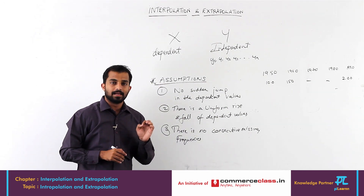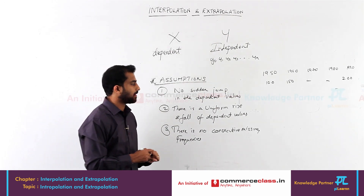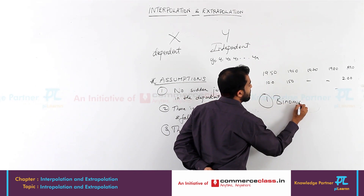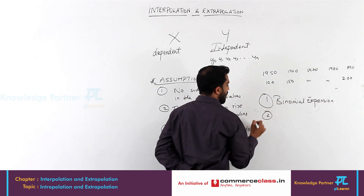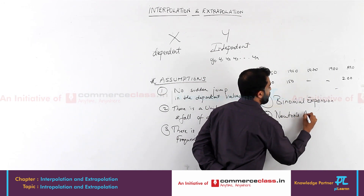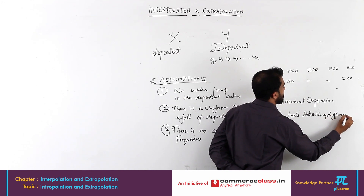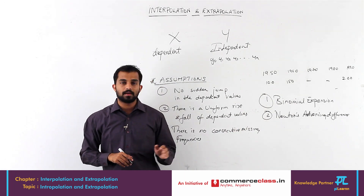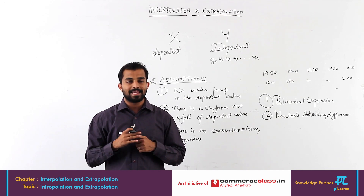Remember about interpolation and extrapolation: there are two methods of calculating this. The first method is called binomial expansion, and the second one is Newton's advancing differences method. About both these methods, we will learn separately along with certain problems in the next video.